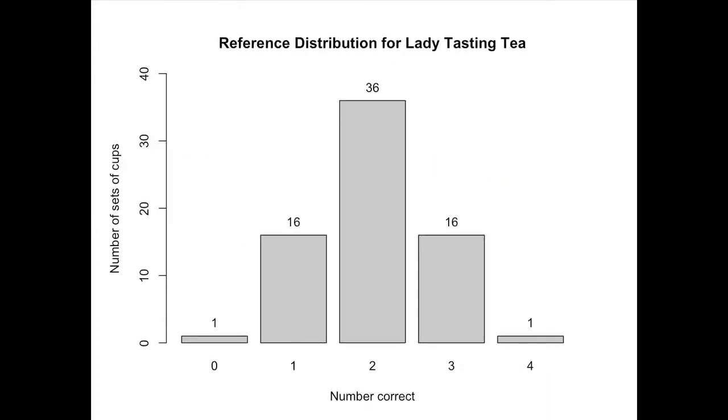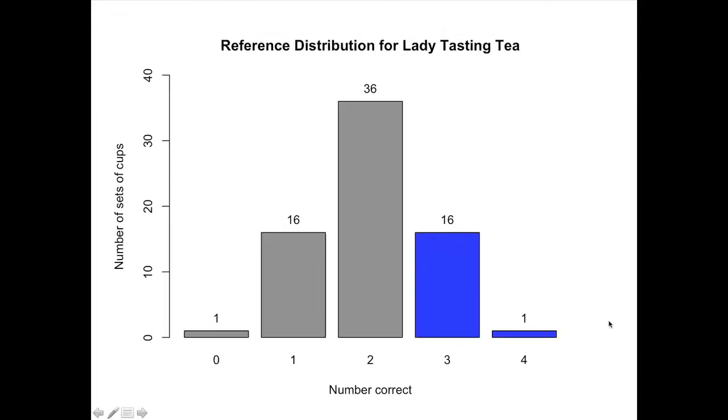Here's the same picture that I just drew for you. What we're saying is, what's the probability that she would have at least three correct? I've filled those in blue so you can see. This is the reference distribution for the number of cups she'd get correct, assuming that she's guessing at random. We can see that she actually got three and that four is greater than three.